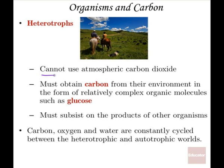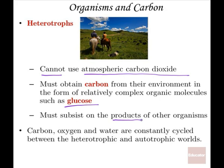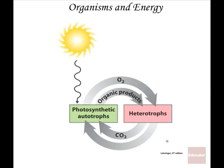Heterotrophs cannot use atmospheric carbon dioxide. They must obtain their carbon from the environment, mostly in the form of complex organic molecules called glucose — the simple form of carbohydrate. By definition, they subsist on the products of other organisms. Carbon, hydrogen, oxygen, and water are constantly cycled between the heterotrophic and autotrophic worlds, and as you can see in this slide, both are dependent on one another.